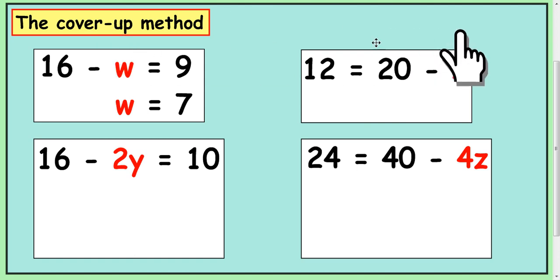Over here, it doesn't really matter. It's the other way around. We've got 12 equals 20 minus something. So, you say 20 take away what equals 12. Well, that's 8, isn't it? x equals 8.